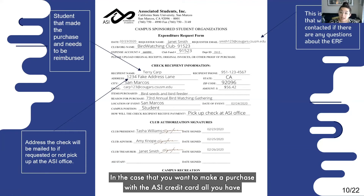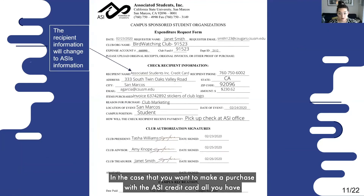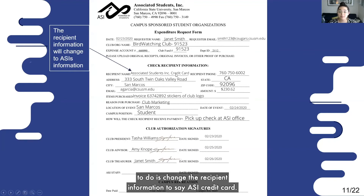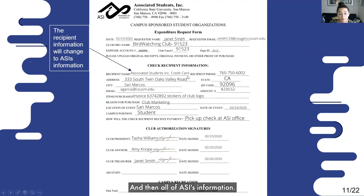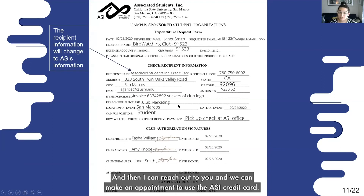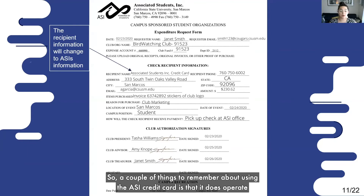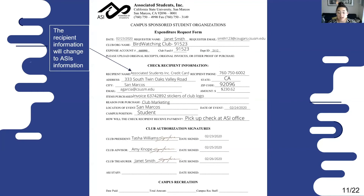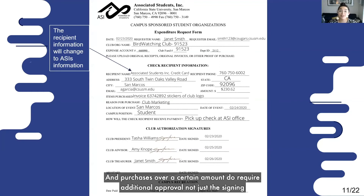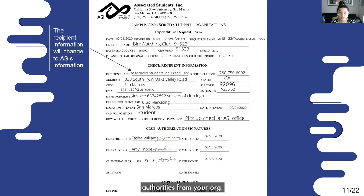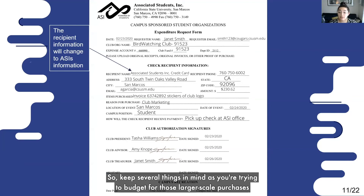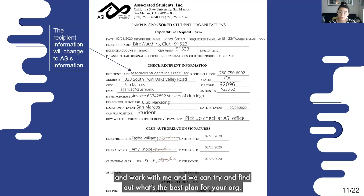In the case that you want to make a purchase with the ASI credit card, all you have to do is change the recipient information to say ASI credit card, and then I can reach out to you and we can make an appointment to use it. A couple of things to remember about the ASI credit card: it does operate on a first-come, first-serve basis, and purchases over a certain amount do require additional approval beyond just the signing authorities from your org. Keep that in mind as you're budgeting for larger-scale purchases and work with me to find the best plan for your org.